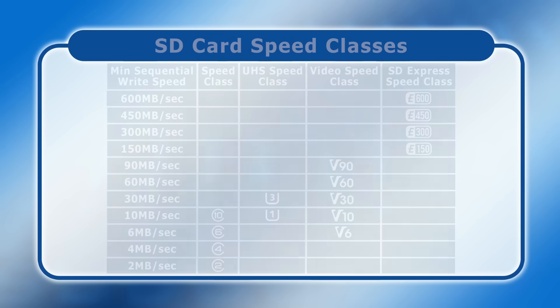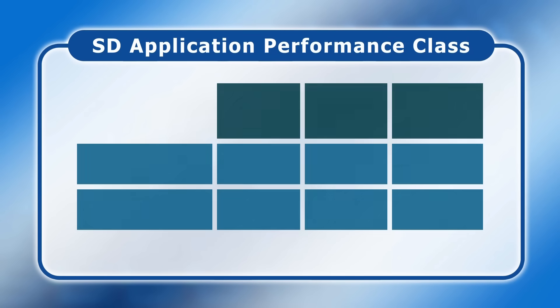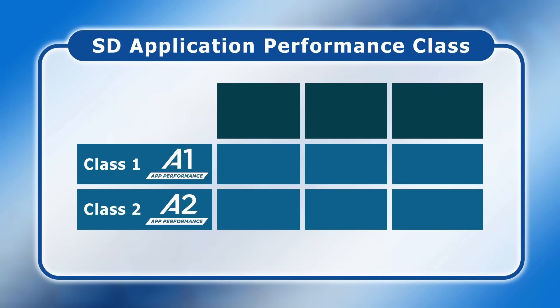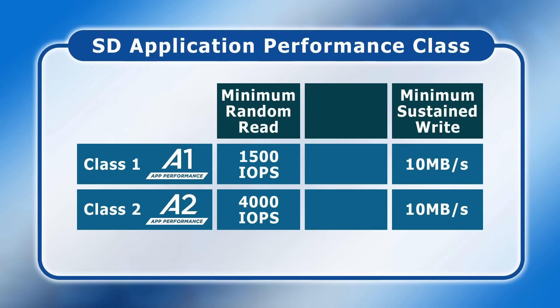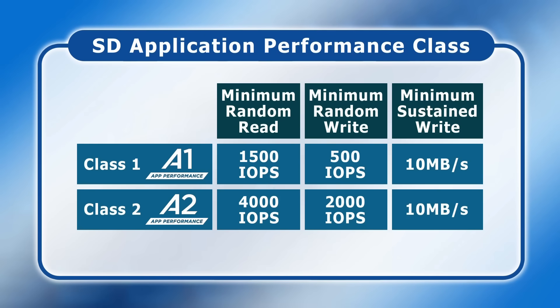It's worth noting that some SD cards are labelled with a fourth application performance class, which can be either class 1 (denoted A1) or class 2 (denoted A2). The minimum sustained write speed is 10 megabytes per second. However, A1 and A2 cards are also certified for a minimum number of IOPS, or input-output operations per second. High IOPS values are important when an SD card is used for running an operating system or applications, so it's worth seeking out an A1 or A2 card if it'll be used to store phone apps or as the system drive on a single board computer.